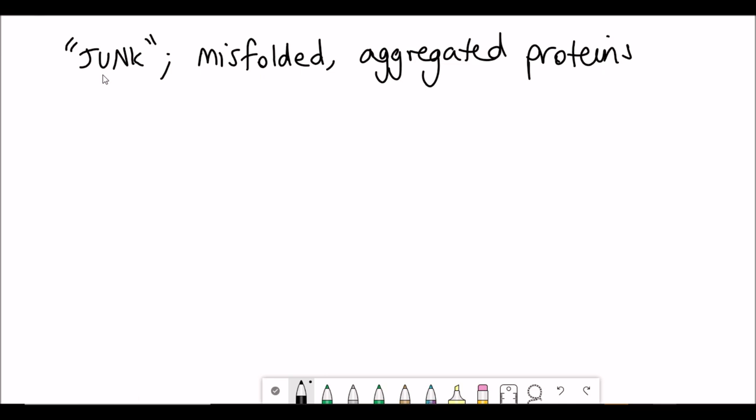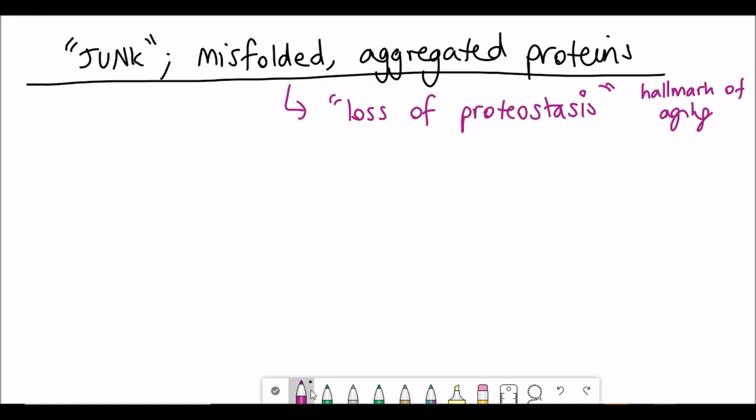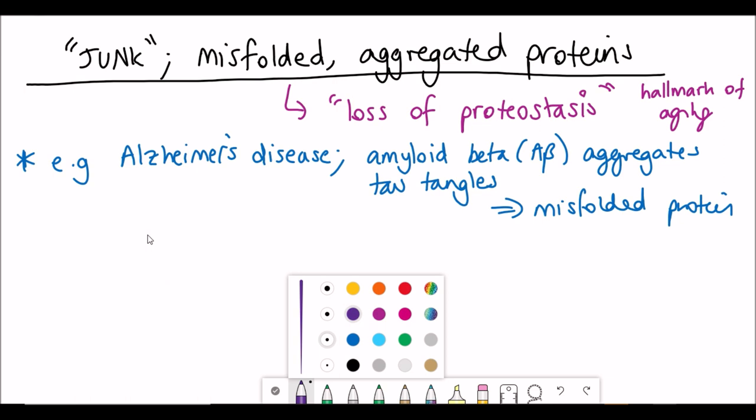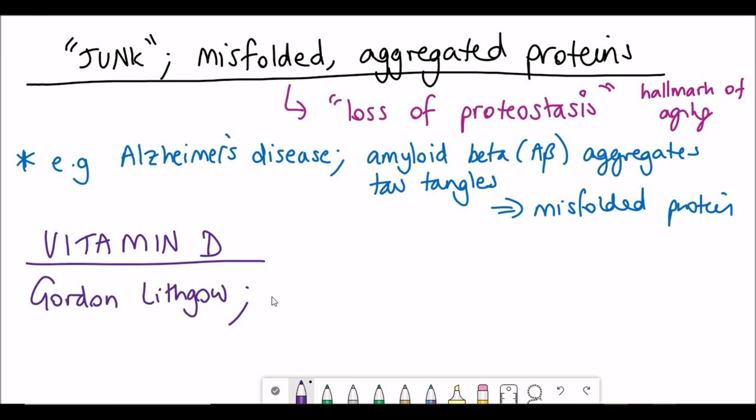Now let's look at what he means by extracellular and intracellular junk. Dave basically refers to junk as misfolded aggregated proteins, and that links with the loss of proteostasis, which is another hallmark of aging. One disease tightly linked to misfolded proteins is Alzheimer's disease, where you get these amyloid beta and tau tangle aggregates, which are basically just misfolded clumps of protein.